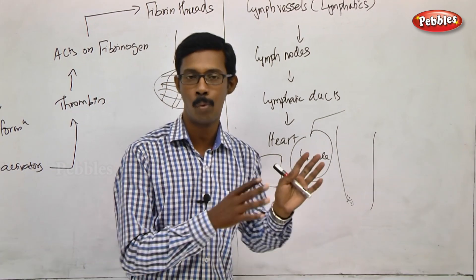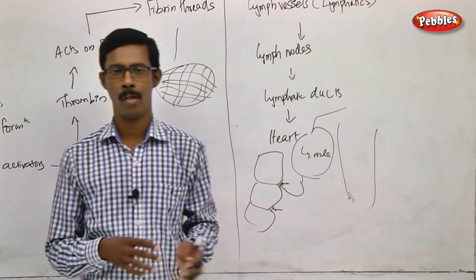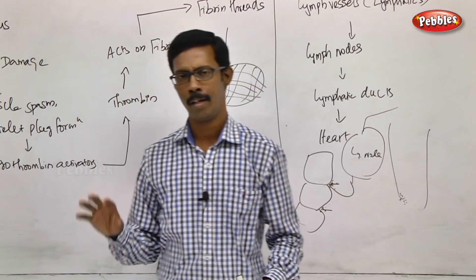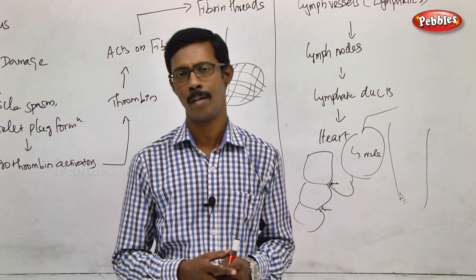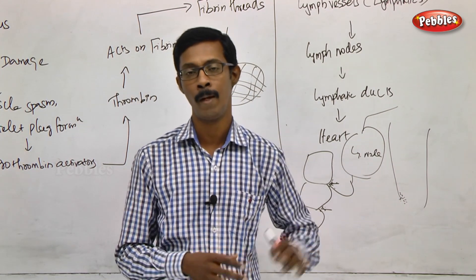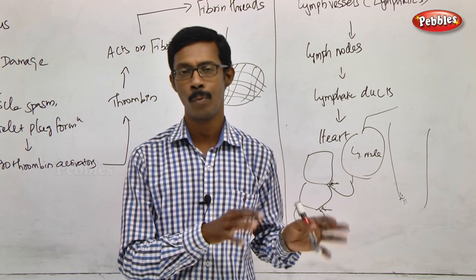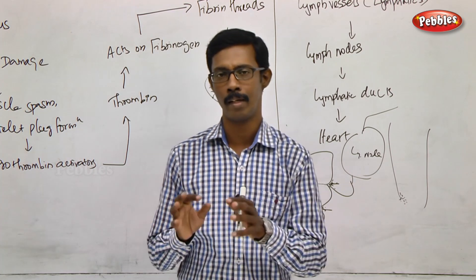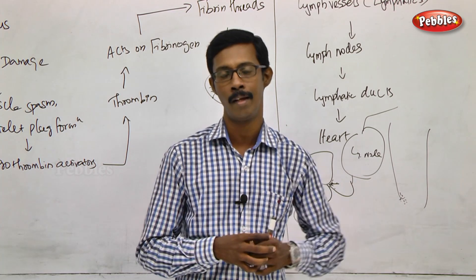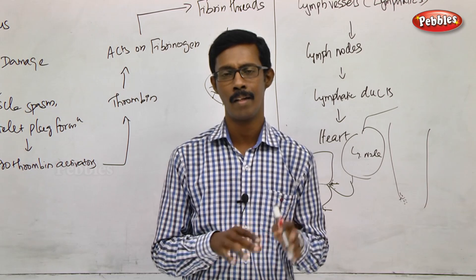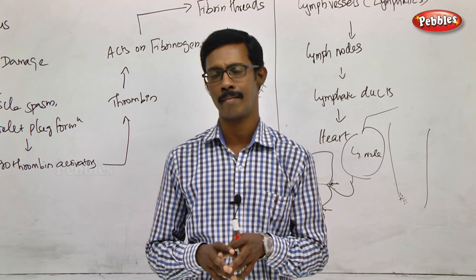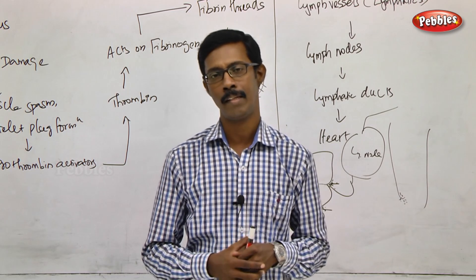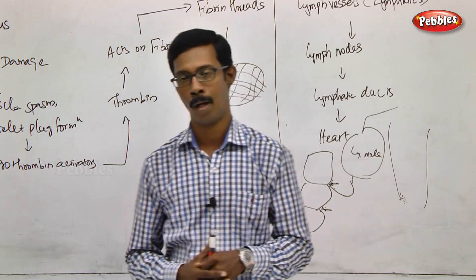So that is the lymph and lymphatic system. What is the blood? What are its components? What are the details of blood vessels — arteries, veins, capillaries — their layers and structure? We will talk about these details.